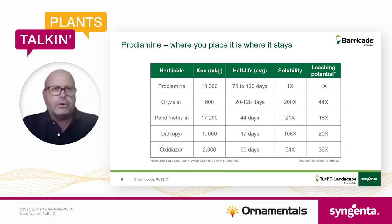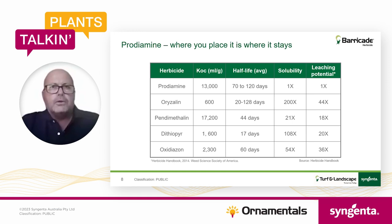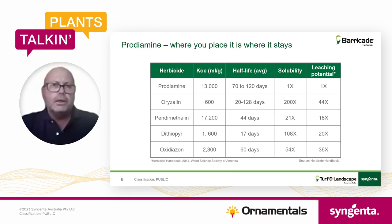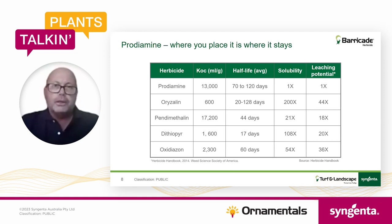On the left-hand column you can see a variety of different active ingredients, including prodiamine — some of these may be common to you and you may be currently using them. When we look across the columns, Koc is the ability of an active ingredient to bind itself to soil carbon — the 'c' stands for carbon, referring to organic matter in the soil. When we combine that with soil half-life — and prodiamine has a very long half-life — combined with its solubility, we get what's called a leaching potential. Solubility is the ability of a herbicide to move within the soil profile once it's been applied.